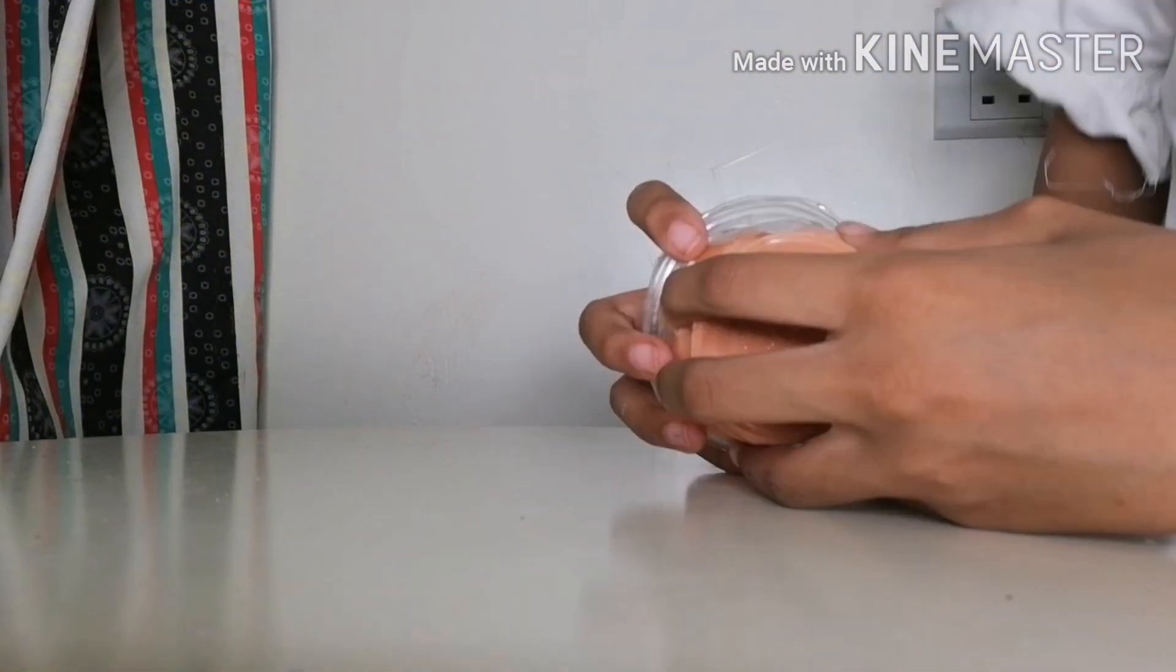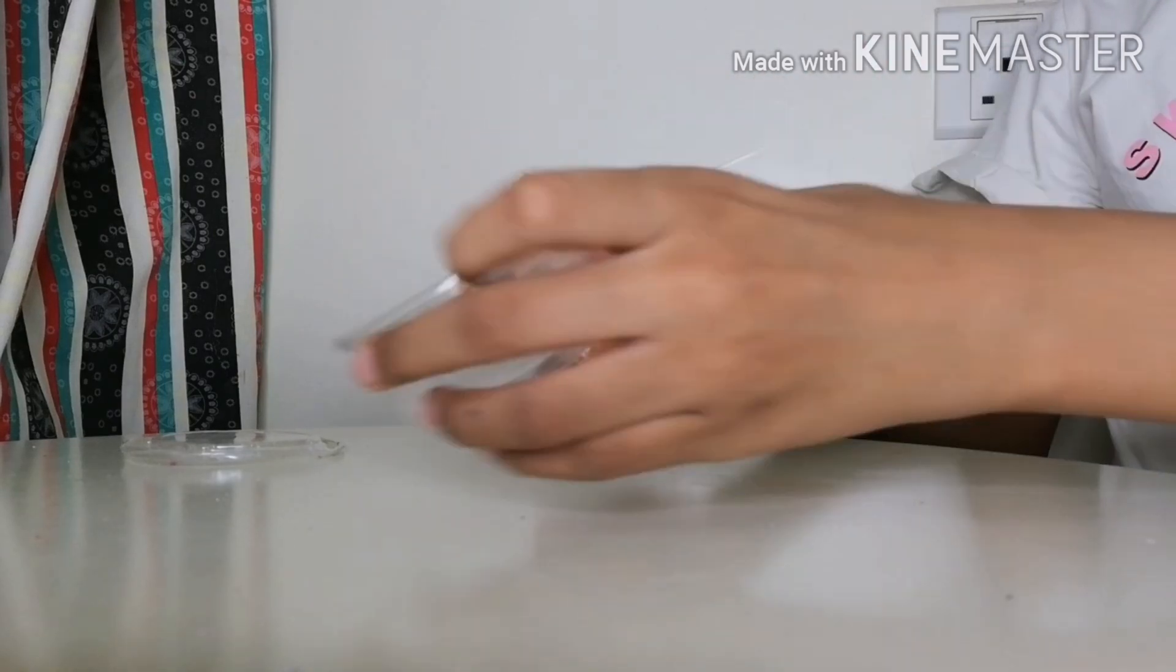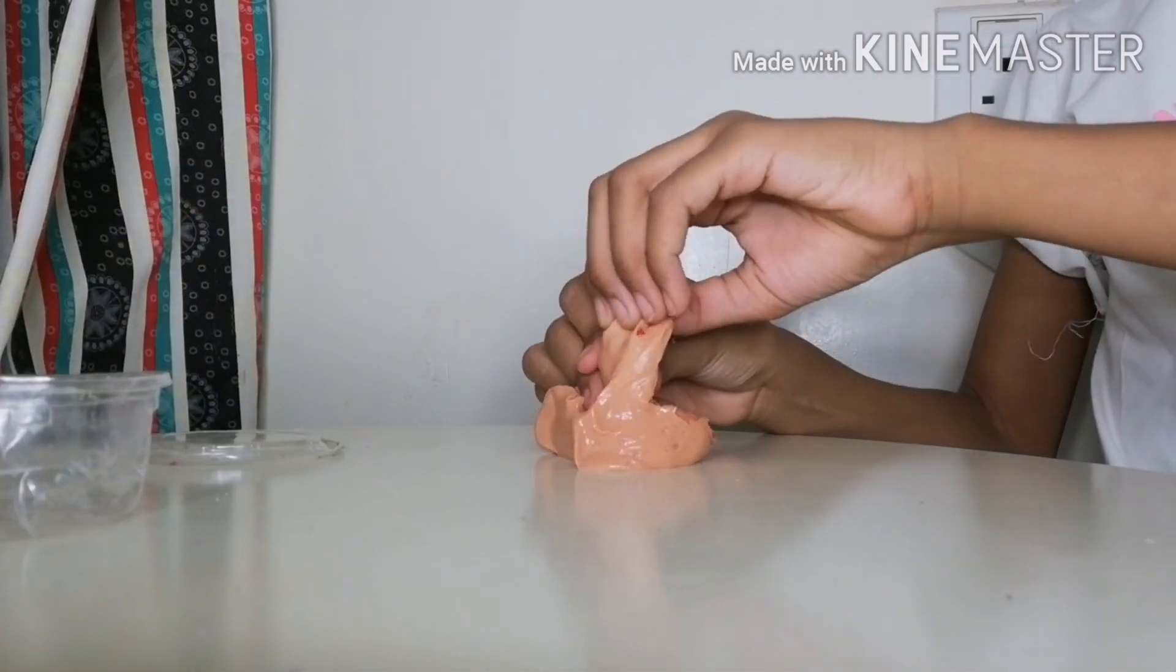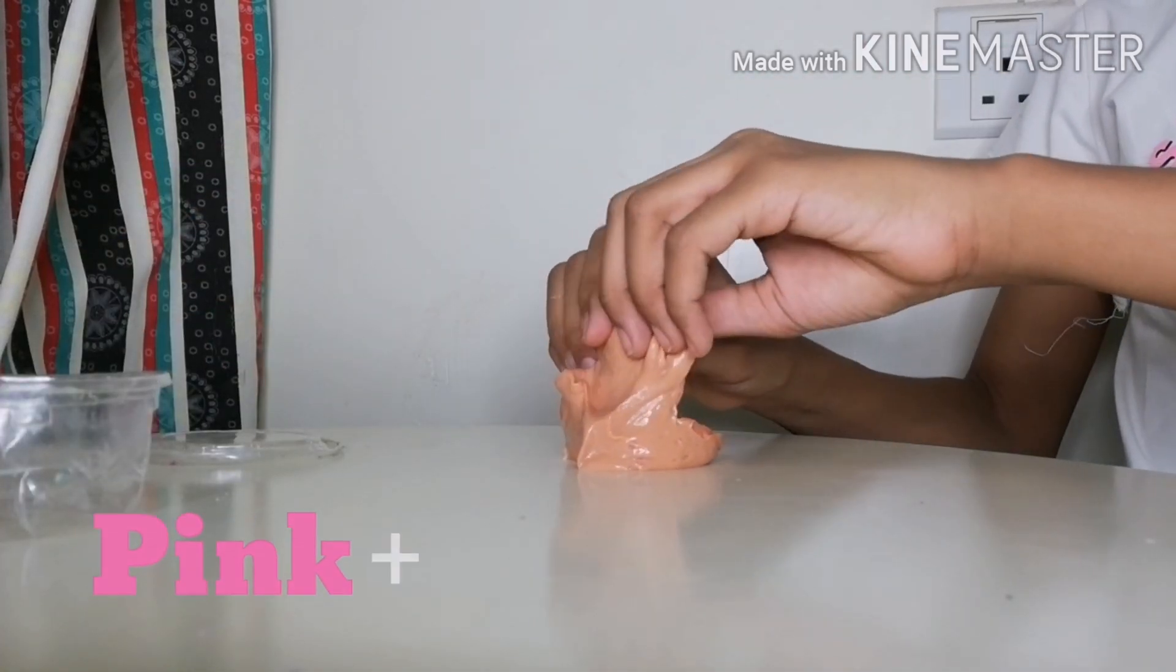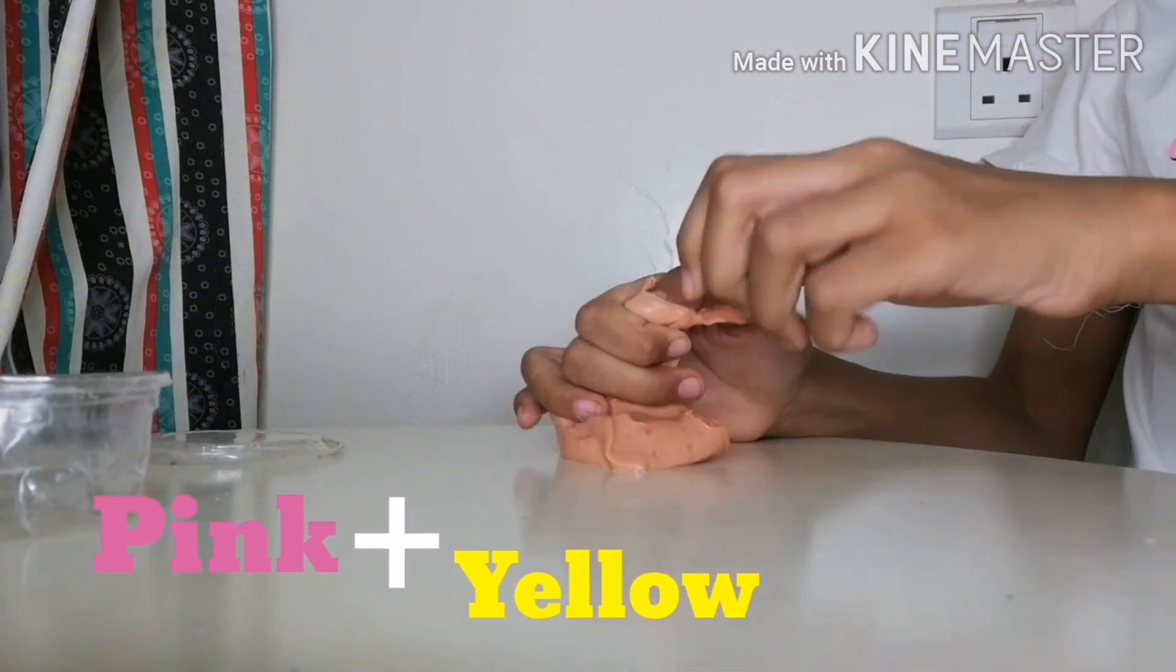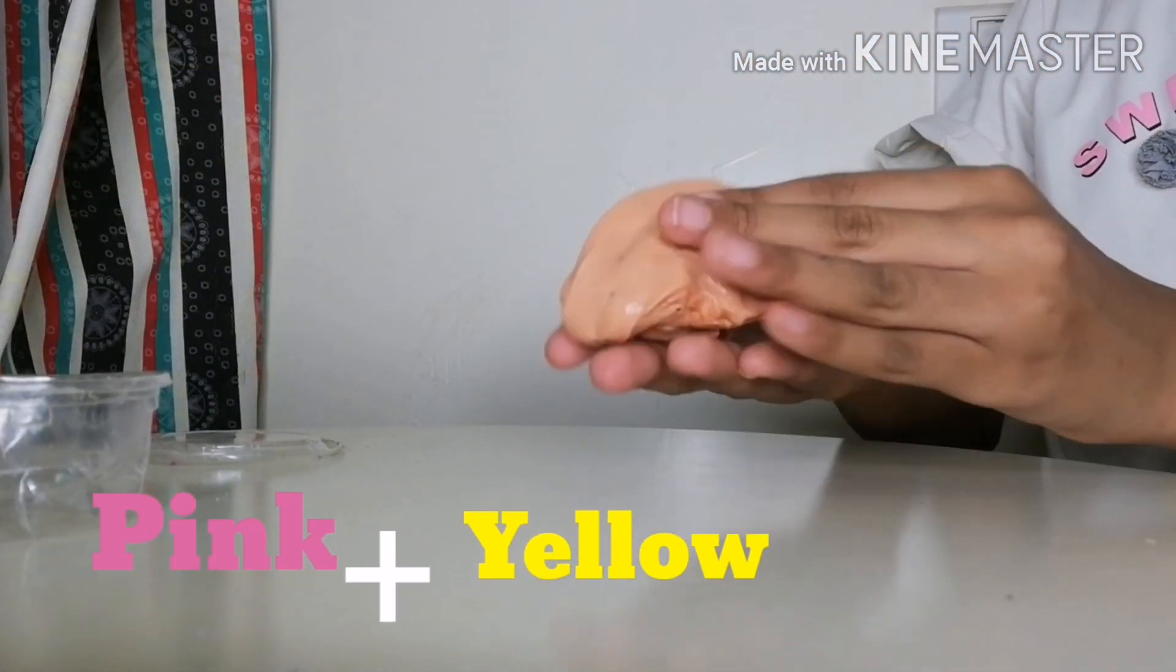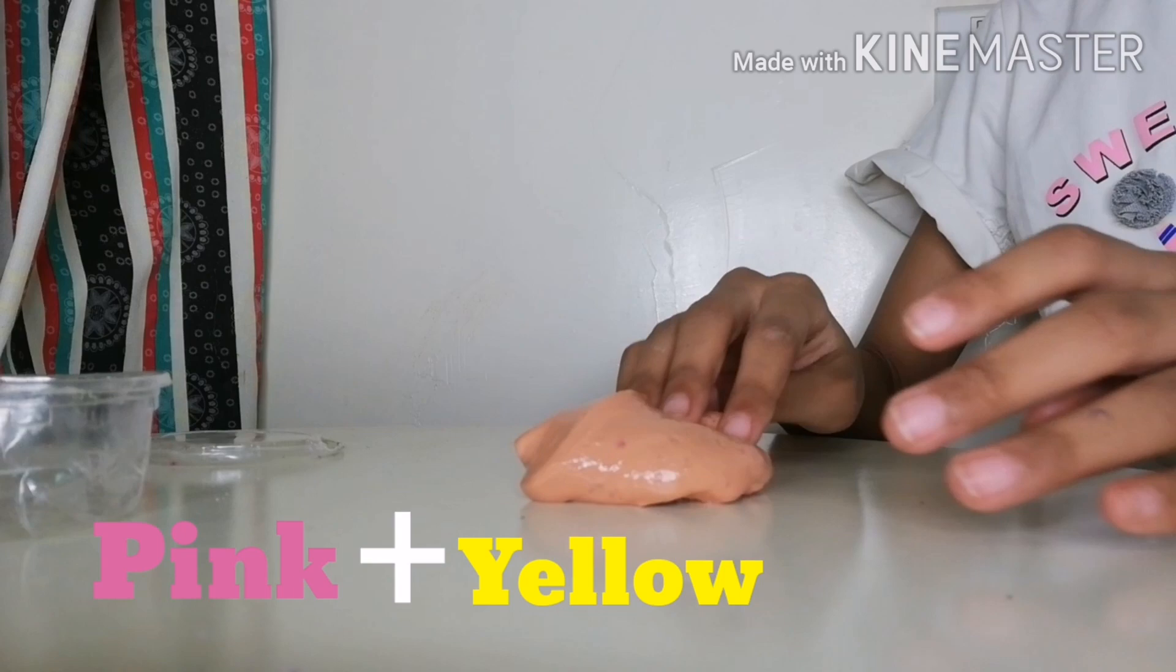Next we have this peach themed slime. It has a peachy color. To make this color you need pink and yellow paint or food coloring, and the texture is just a basic slime.